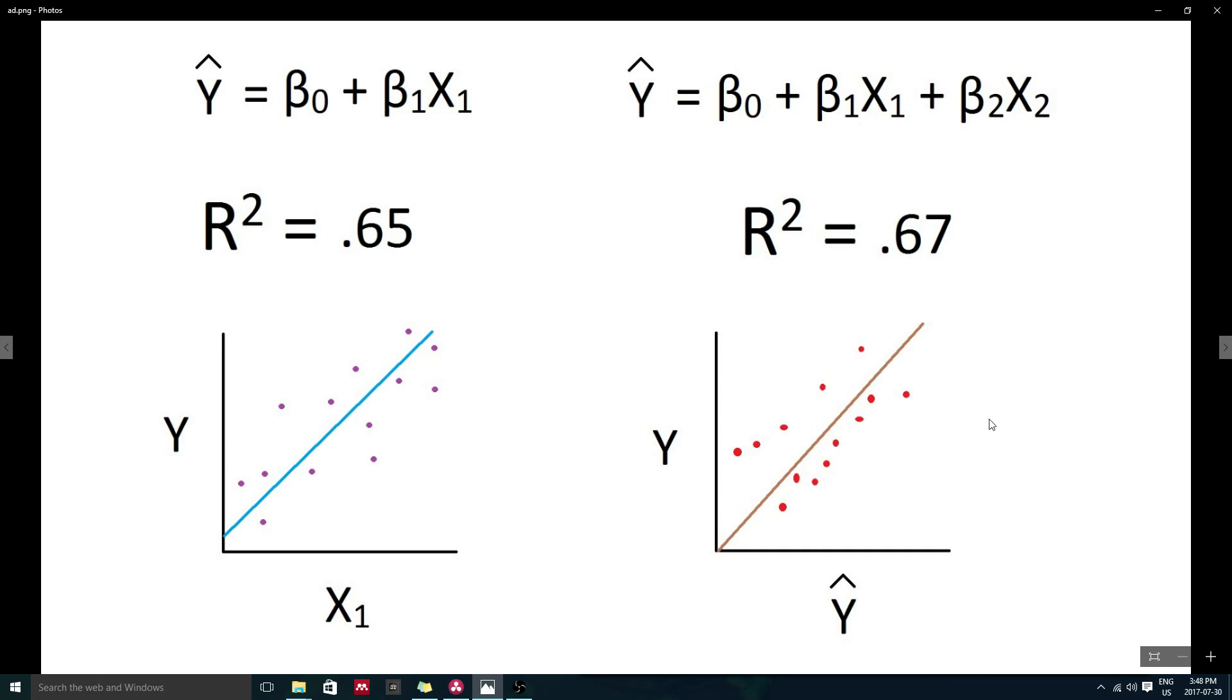As we can see, the inclusion of x2 doesn't seem to help the model too much, even though on its own it showed a really strong relationship to y. This is because x1 and x2 provide almost the same information, so when we add one of them to a model that already contains the other, they don't appear particularly important.